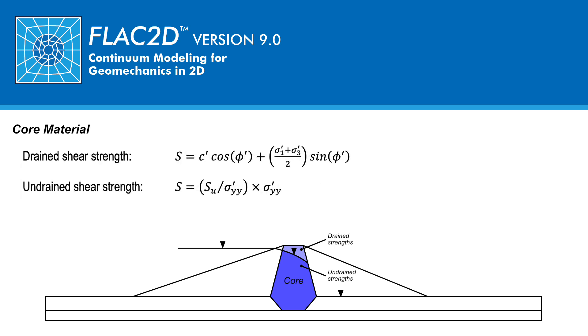The drained shear strength of the core material is S equals drained cohesion times the cosine of the drained friction angle plus the sum of the maximum and minimum effective principal stresses divided by 2 times the sine of the drained friction angle. The value of S represents the radius of the Mohr circle at initial yield with elastic response under simple shear loading.